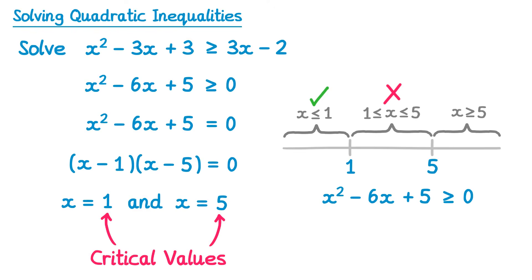We move on to the final section. x is greater than or equal to 5. I'm going to pick the number 6. So we do 6 squared, take away 6 times 6, plus 5. 6 squared is 36. Negative 6 times 6 is negative 36, so the 36s will cancel. So again, we're just left with 5. Is 5 greater than or equal to 0? Yes. So this forms part of our solution.